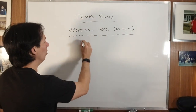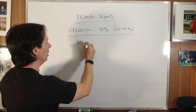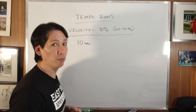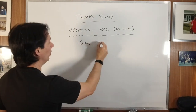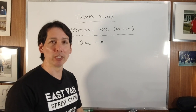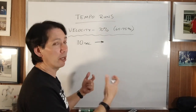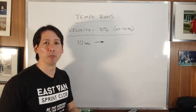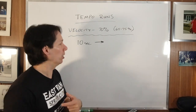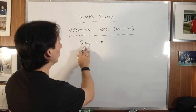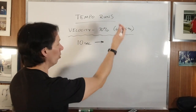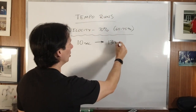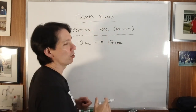So if you have somebody who runs a 10-second flat 100 meters, and we take what is 70% over that same distance — a lot of tempo running is done with 100, 200 meters, sometimes 300. So we go 10 seconds, and at 70%, that's going to be a 13-second effort.